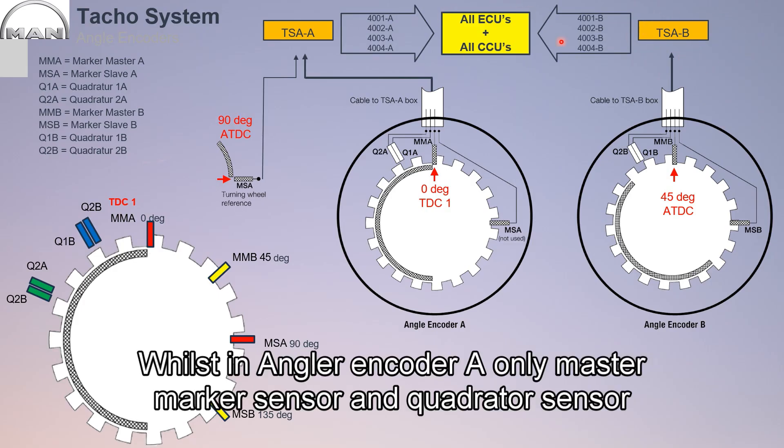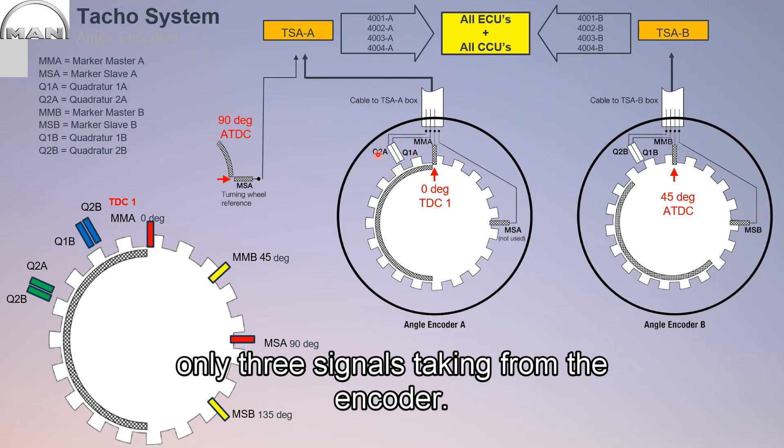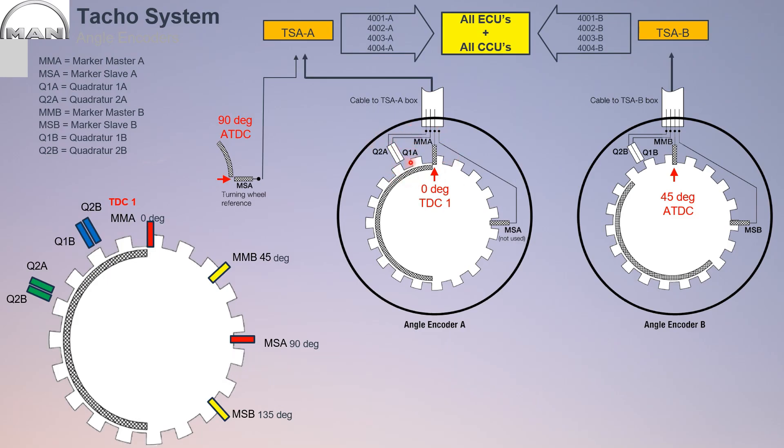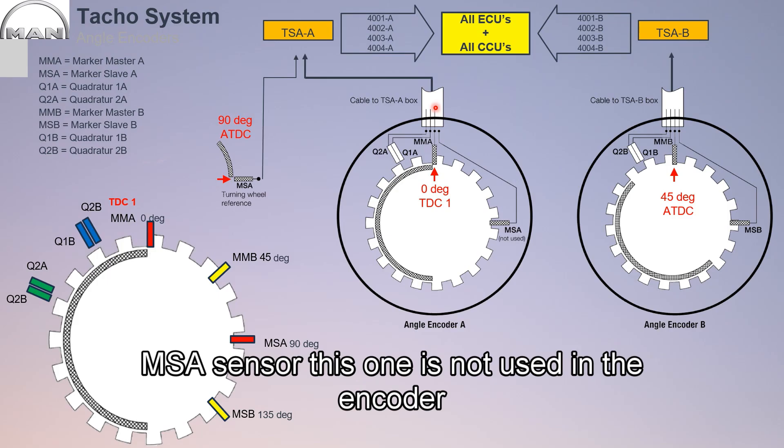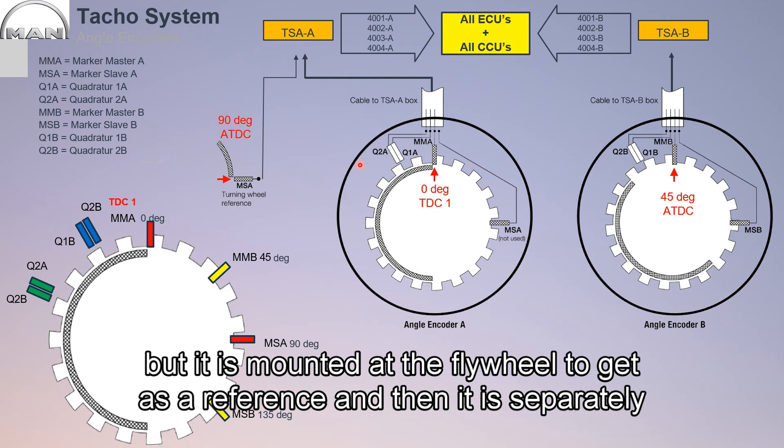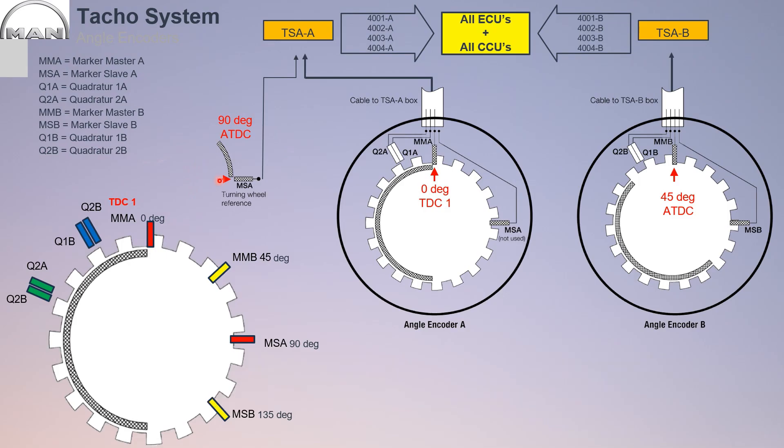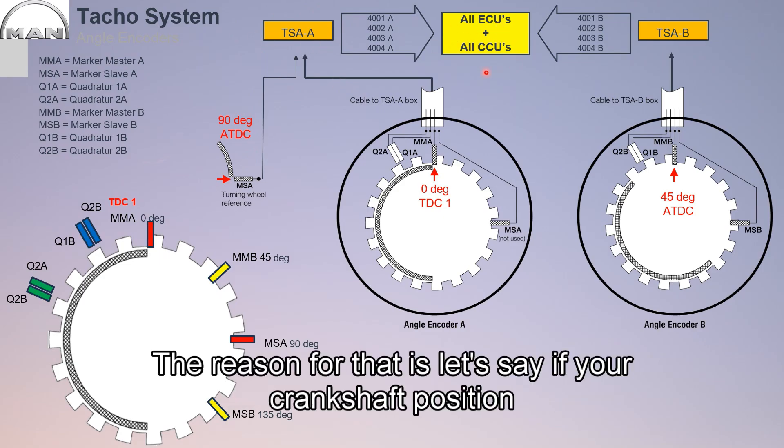Whilst in angle encoder A, only master marker sensor and quadrature sensor, only three signals. The encoder MSA sensor is not used in the encoder, but it is mounted at the flywheel to get as a reference, and then it is separated to PSA A and then used in ECUs and CCUs.